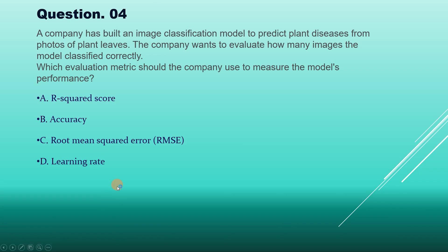The correct answer is option B, accuracy. Accuracy is the most straightforward metric, measuring the proportion of correctly predicted instances out of the total instances. It is suitable when the classes are balanced. So option B, accuracy, is the correct answer.